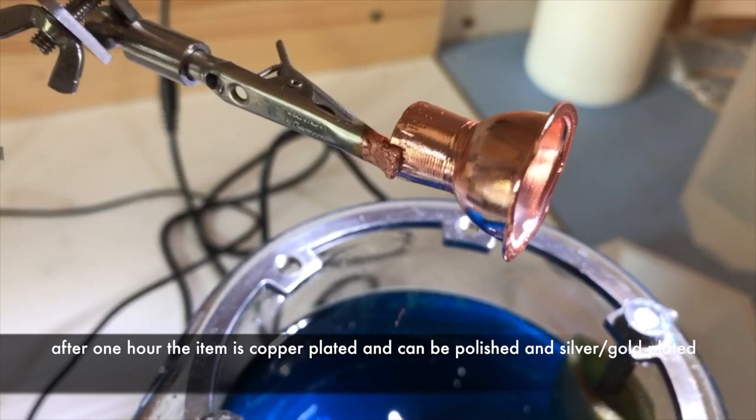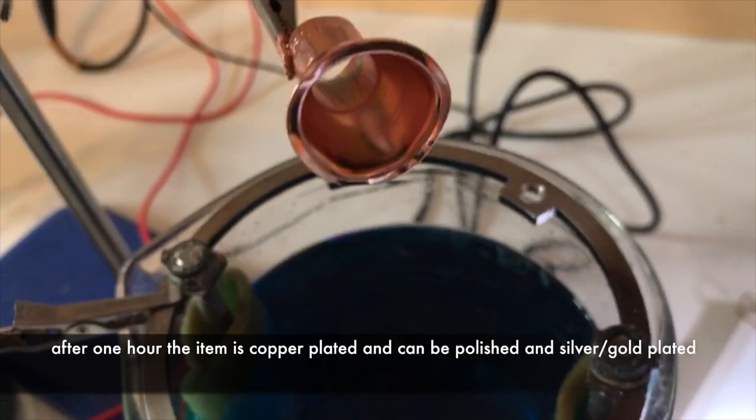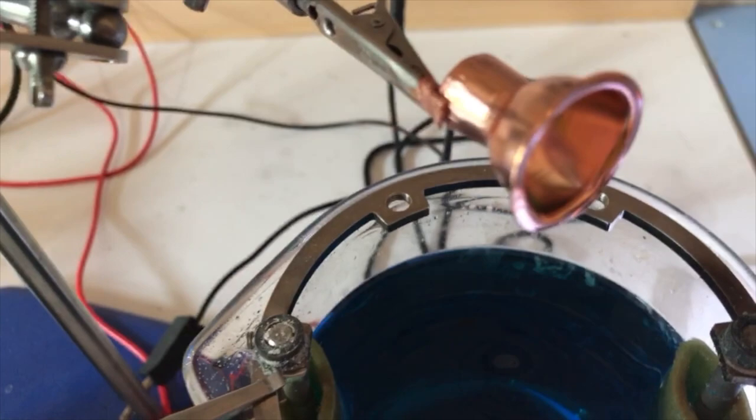You can see it's semi-bright. If you would have polished it before, it would be like a mirror finish. You can polish it now afterwards on a polishing mob, special mob, and then job done.